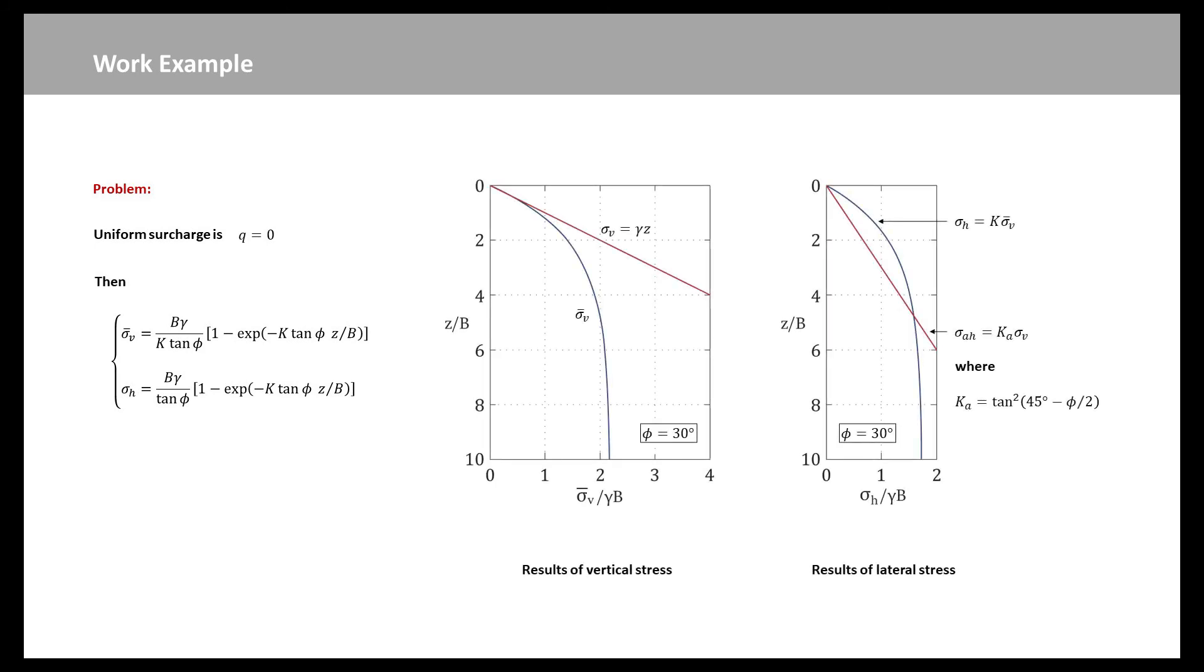In Rankine's theory, the vertical stress sigma-v is gamma times z. The active lateral pressure sigma-ah is k-a times sigma-v, where k-a is expressed here. From the two figures, the Rankine's stress distributions are linearity. In contrast, the stress distribution of the current theory is non-linearity.